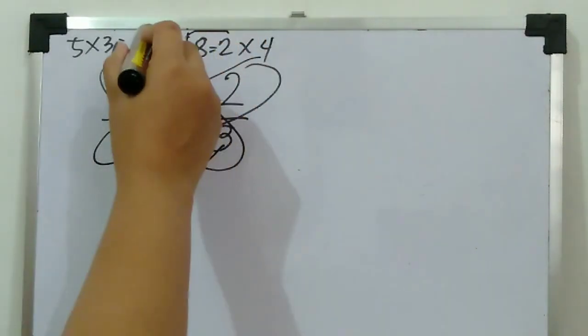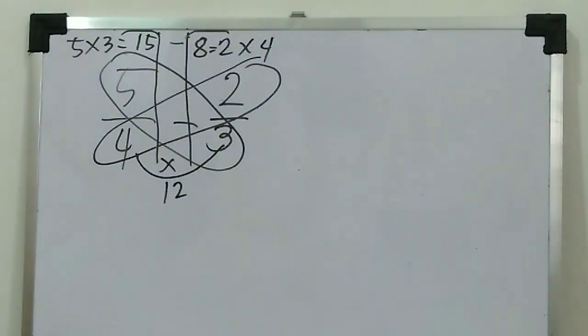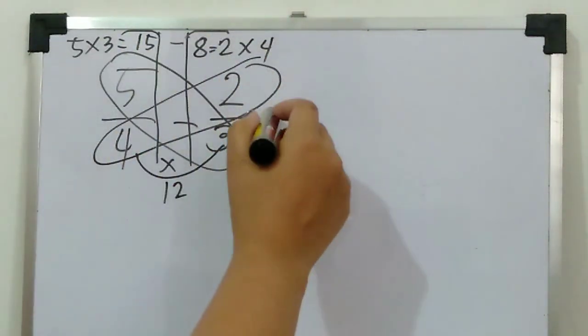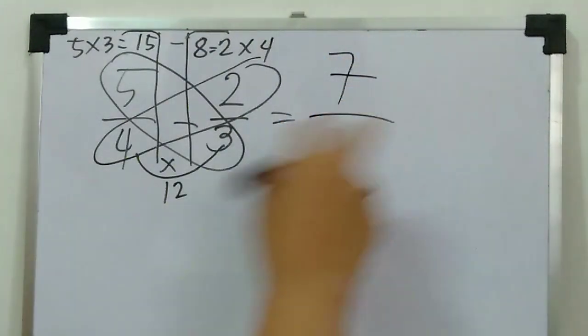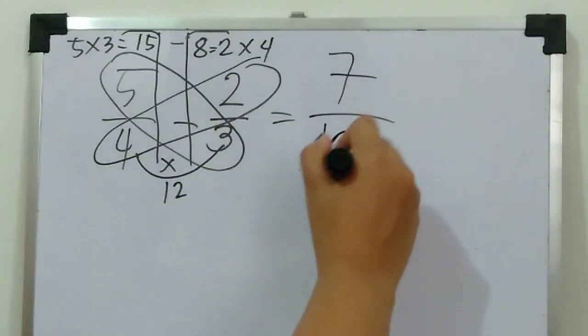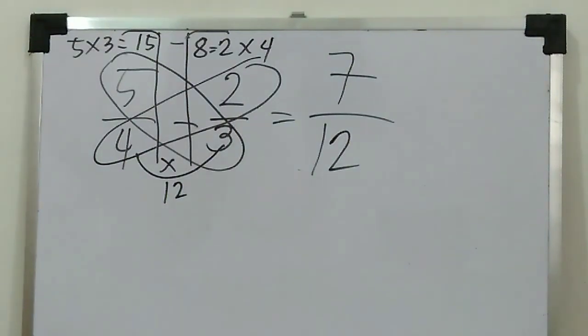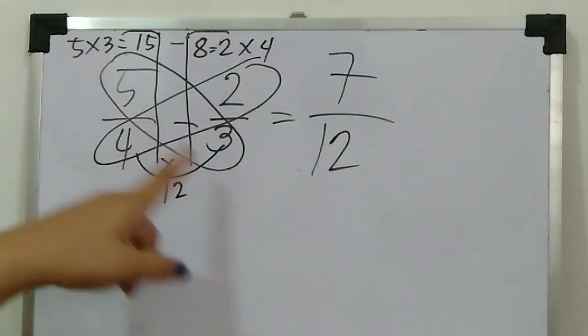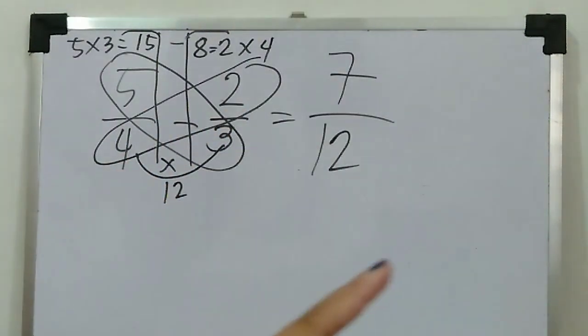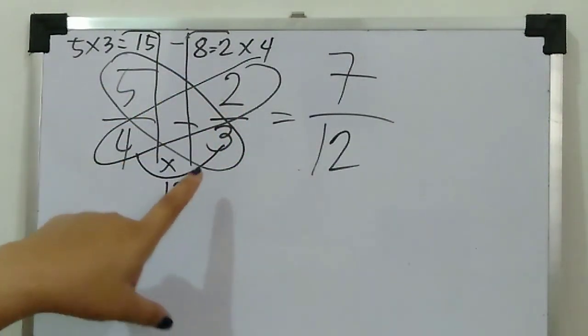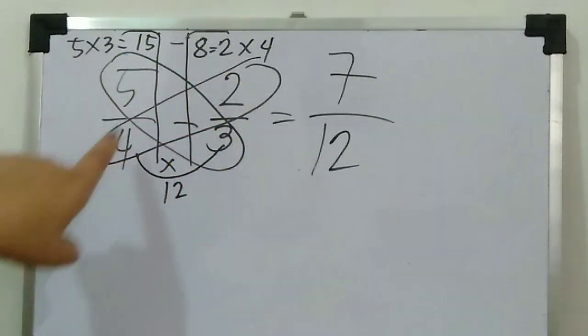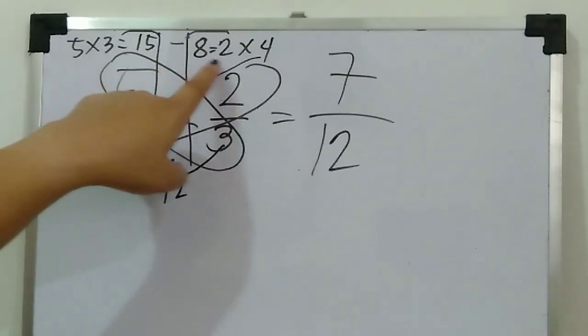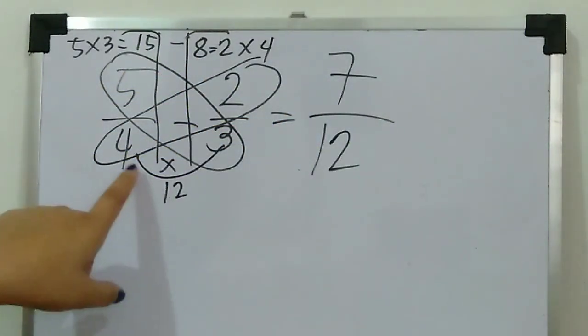So, divide it like this. Always remember what shape it forms. It forms a butterfly. So fifteen minus eight, what's the answer? The answer is seven, then twelve. Seven over twelve. It's fast to remember because it forms a butterfly.